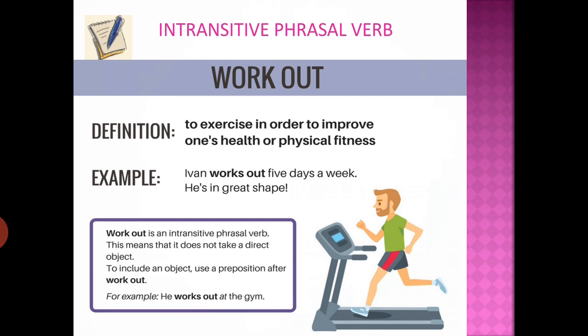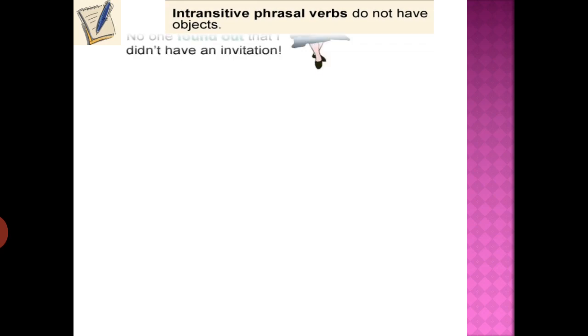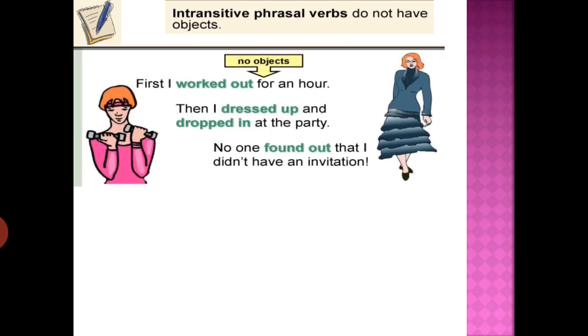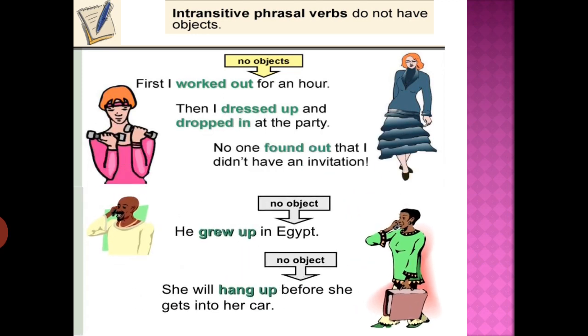More intransitive phrasal verb examples: 'I worked out for an hour' — no object. 'I dressed up and dropped in at the party; no one found out that I didn't have an invitation.' 'He grew up in Egypt.' 'She will hang up before she gets into her car.' All these intransitive phrasal verbs do not have any objects.